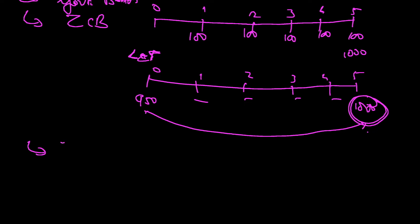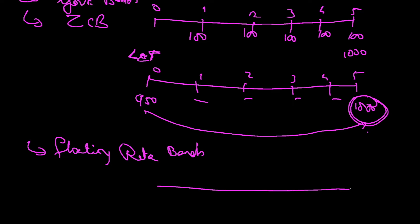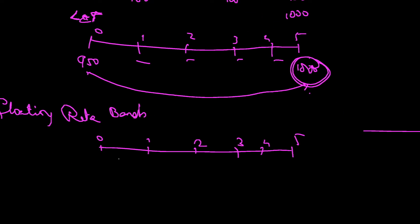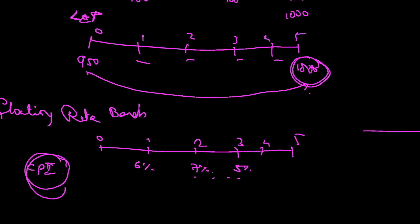Other types of bonds include floating rate bonds. In floating rate bonds, the interest payment is linked to some reference rate. For example, it can be linked to CPI — Consumer Price Index. If inflation is 6%, the company will pay 6%; if it goes to 7%, they pay 7%; if it goes to 5%, they pay 5%. Based on the prevailing consumer price index rate, the interest is paid accordingly. That's why it is called a floating rate bond.